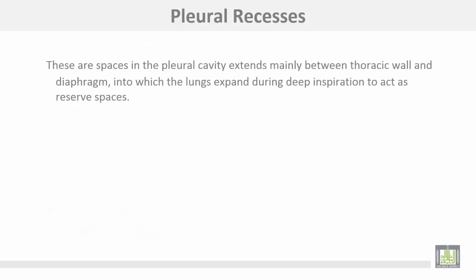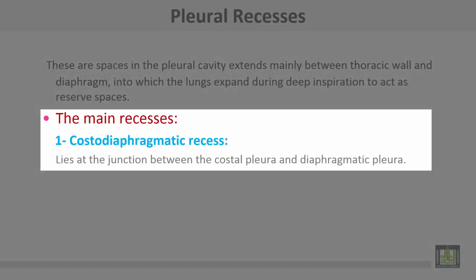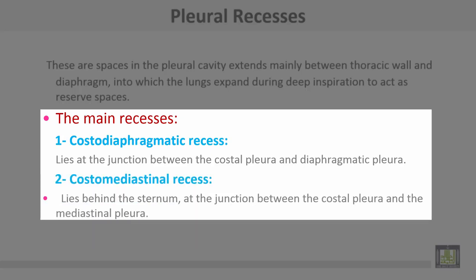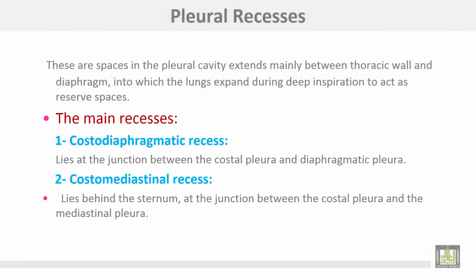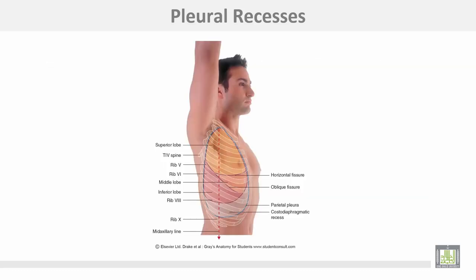Then it ascends to the last point. Pleural recesses are spaces in the pleural cavity that extend mainly between the thoracic wall and diaphragm, into which the lung expands during deep inspiration to act as reserve spaces. The main recesses are: number one, the costal diaphragmatic recess, which lies at the junction between the costal pleura and diaphragmatic pleura; and the costal mediastinal recess, which lies behind the sternum at the junction between the costal pleura and mediastinal pleura. These figures show the pleural recesses, which are occupied by the lung during deep inspiration.